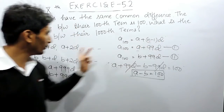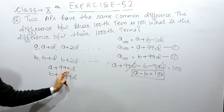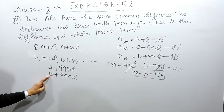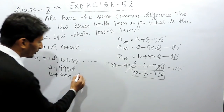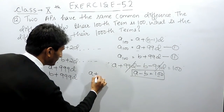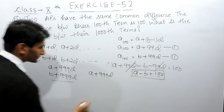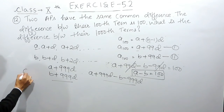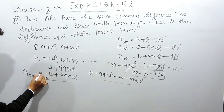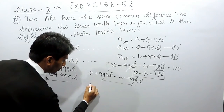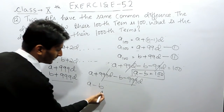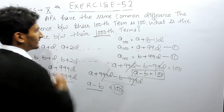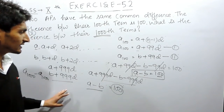Using the formula A plus (n minus 1)D, for n equals 1000, we get 1000 minus 1 equals 999. So the thousandth term of the first AP is A plus 999D and for the second AP it is B plus 999D. The difference is (A plus 999D) minus (B plus 999D), which simplifies to A minus B, and since A minus B equals 100, the difference between the thousandth terms is also 100.